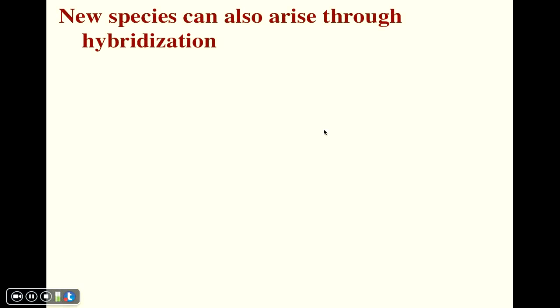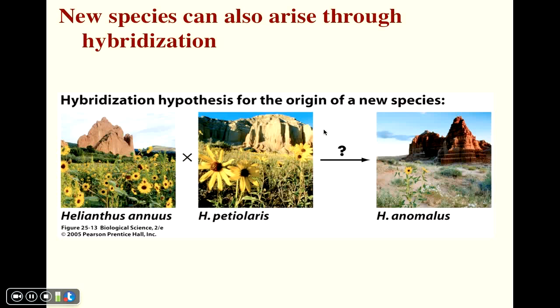It's also thought that new species can arise through hybridization. So, at the beginning of this video, we showed you pictures of mules and wolfens and ligers, but plants also are notorious for hybridizing with each other. As an example, in the southwestern part of the United States, there are a variety of sunflowers that grow there. And what we see here are three different species of sunflowers. Helianthus annuus, Helianthus petiolaris, and Helianthus anomalus.